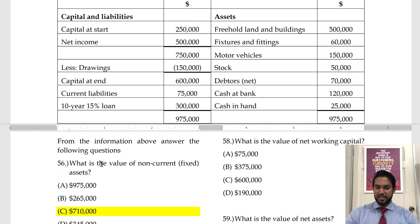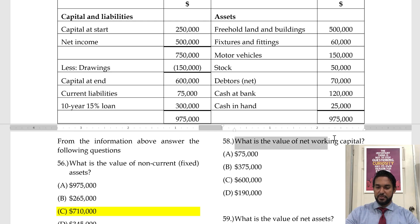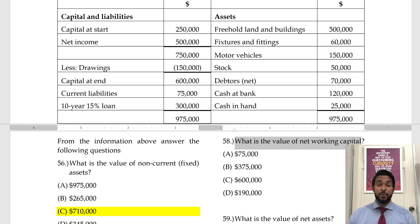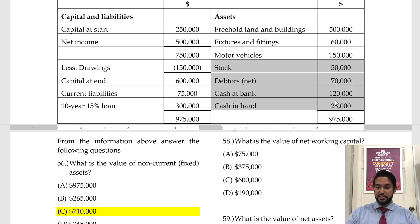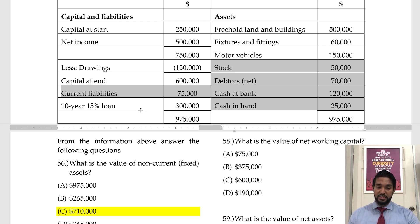What is the value of net working capital? We met net working capital in our previous video, video number five. Net working capital is current assets minus current liabilities. Current assets total 265,000. Current liabilities — we have one figure, which is 75,000. So 265 minus 75 gives us net working capital of 190,000.